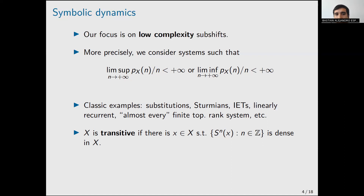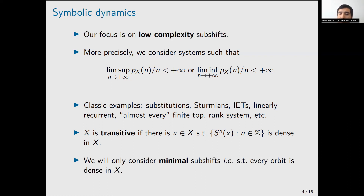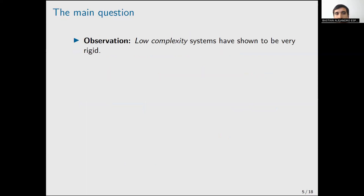Before continuing, two important definitions. Transitivity is the natural notion of irreducibility in symbolic dynamics: there exists a point x whose orbit is dense. Minimality is stronger: every orbit is dense. Although minimality is stronger, it simplifies statements and discussion. Importantly, the two structure theorems I will present hold in the transitive setting.